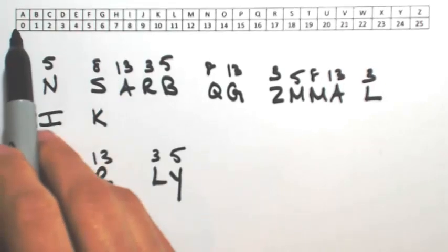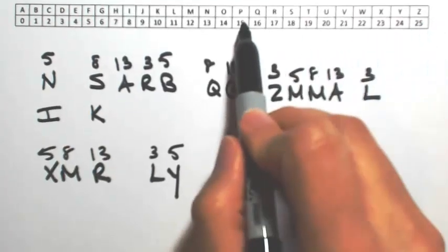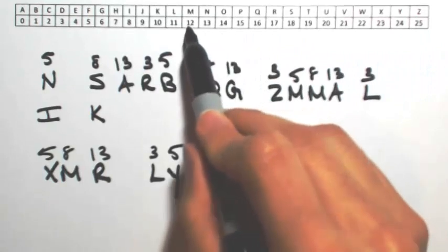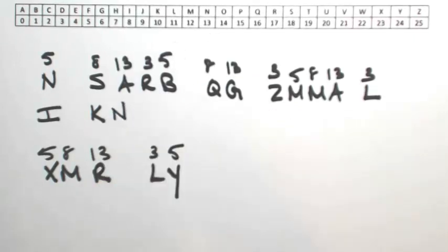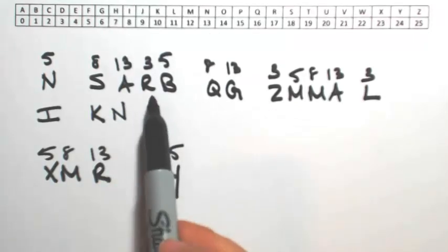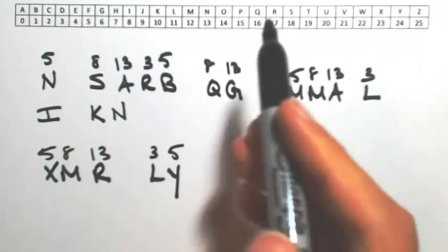The A was shifted by 13, so let me just back it up 13. So 25 to 15 would be 10, 11, 12, 13. The R was shifted by 3, so back 3 would be 0.